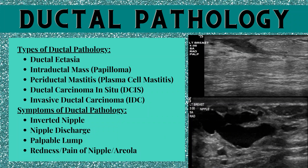Next, let's talk about ductal pathology. Types of ductal pathology are ductal ectasia, which are dilated ducts; an intraductal mass, most commonly a papilloma; periductal mastitis, also known as plasma cell mastitis; and cancer — ductal carcinoma in situ and invasive ductal carcinoma. Symptoms associated with ductal pathology are an inverted nipple, nipple discharge, palpable lump, or redness or pain of the nipple or areola.